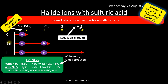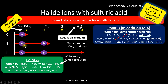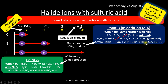Bromine vapor and sulfur dioxide are produced — SO₂ is acidic and not pleasant. These are very nasty products. Iodide is a more powerful reducing agent and can reduce sulfuric acid even further. At point C, with sodium iodide: iodide ions are oxidized to I₂ and sulfuric acid is reduced to elemental sulfur (S, oxidation state 0) — more reduced than SO₂. So you get iodine and yellow solid sulfur.